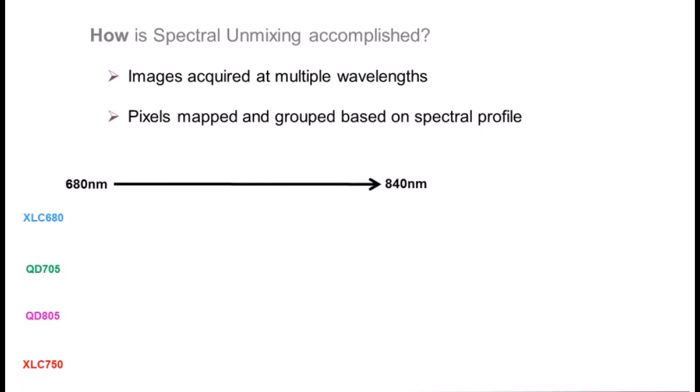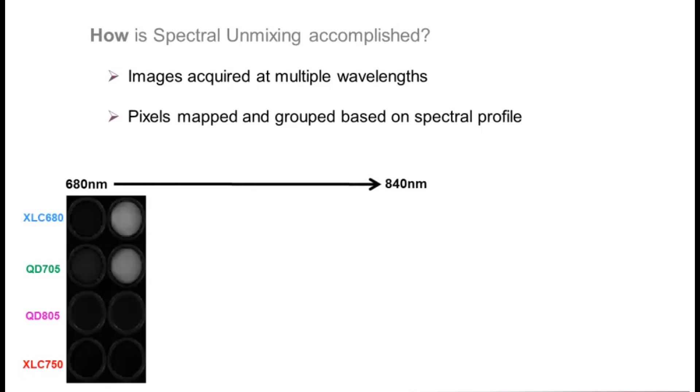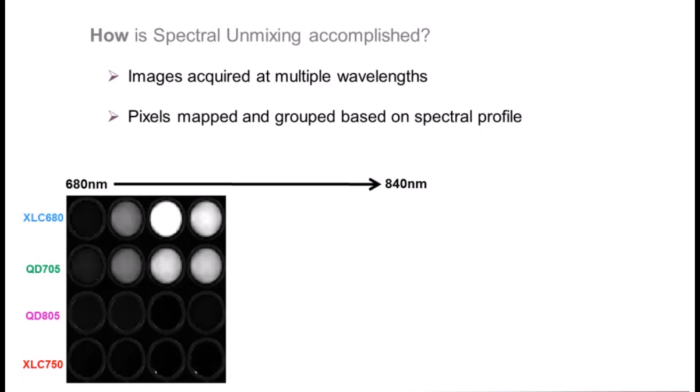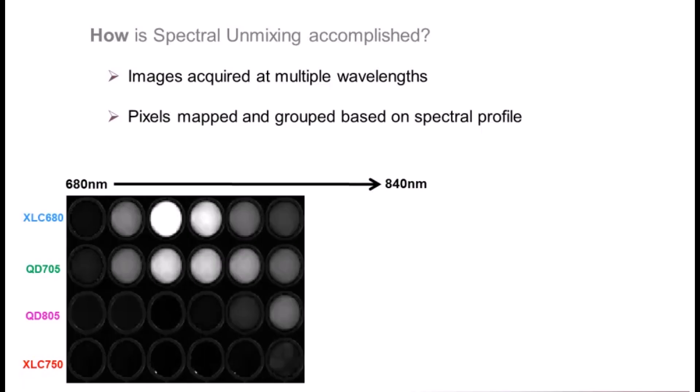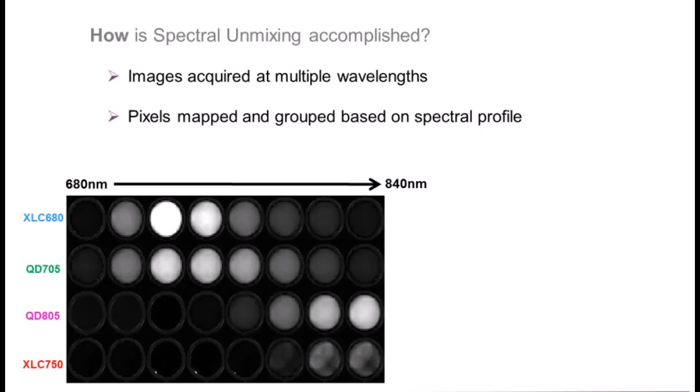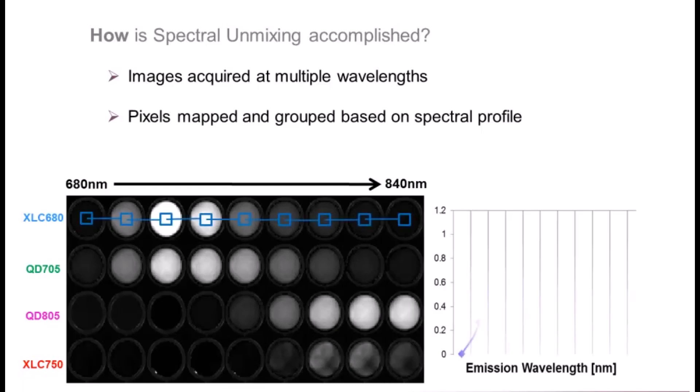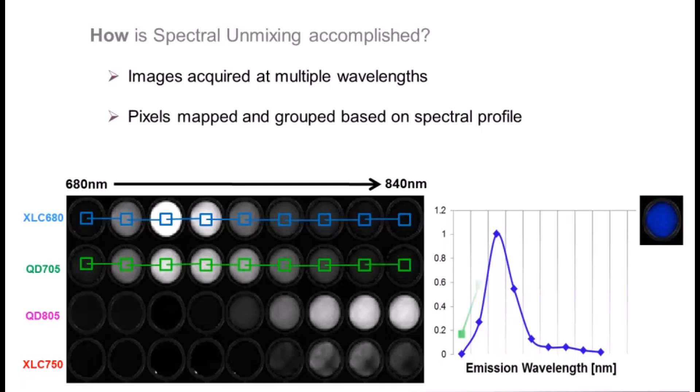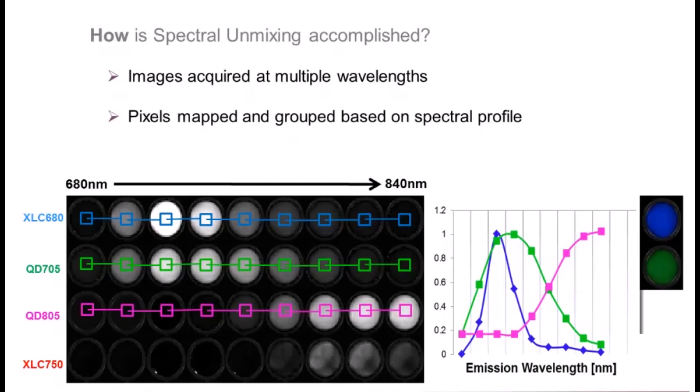To accomplish this, images are acquired at multiple wavelengths. In this case we scan from 680 to 840 nanometers. Pixels from the acquired images are mapped and grouped based on their spectral profile or signature. These grouped pixels are then separated into individual components so that accurate quantitation can be performed.